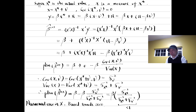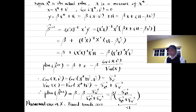First, let's consider the measurement error in an explanatory variable. Suppose x* is the actual value and x is the measure of x*. The measurement error is nu. The classical errors-in-variables assumption is that the measurement error nu is uncorrelated with the unobserved explanatory variable x*. The true relationship between the outcome variable y and the actual explanatory variable x* is that y equals beta times x* plus the error term mu. We can express y as a function of the observed explanatory variable x and the composite error term mu minus beta times nu.